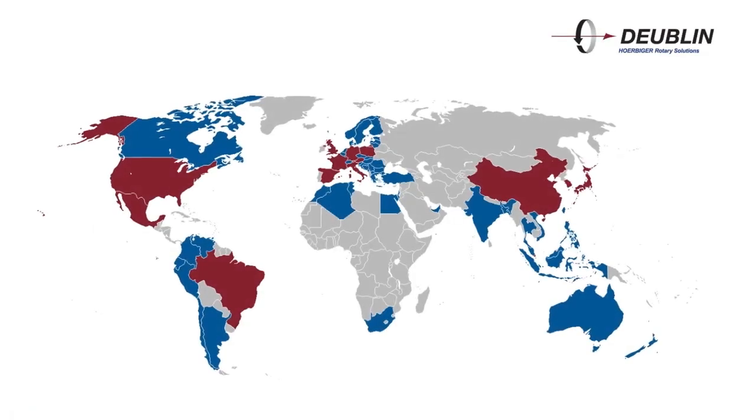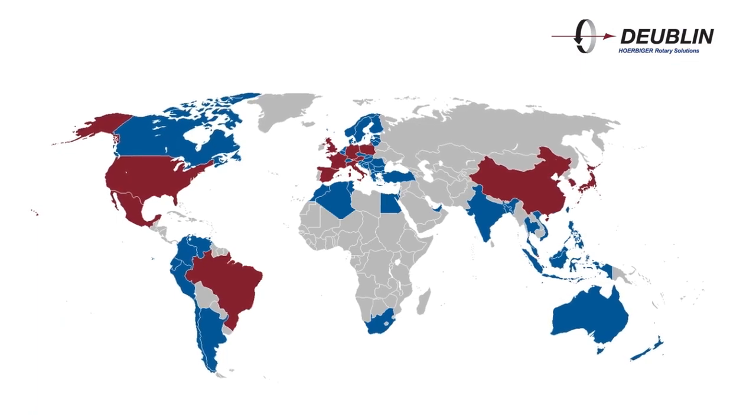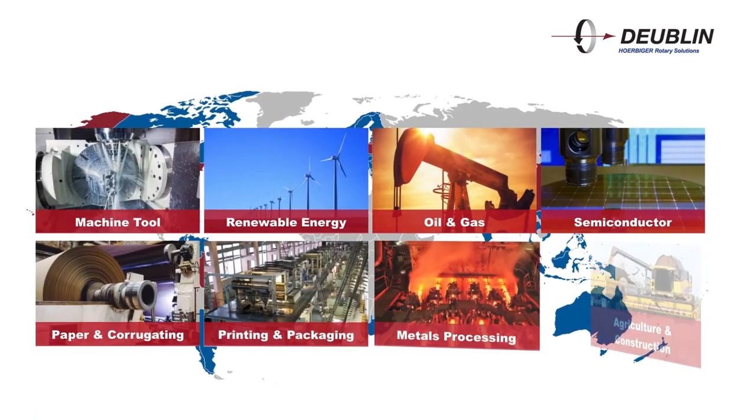Jubelin, the world's largest manufacturer of rotary unions, offers engineered solutions for a multitude of applications.